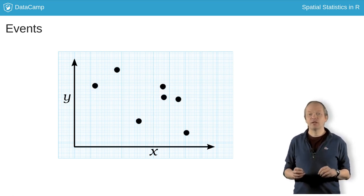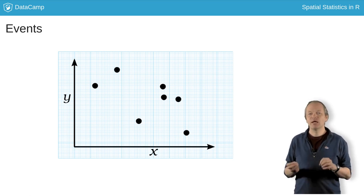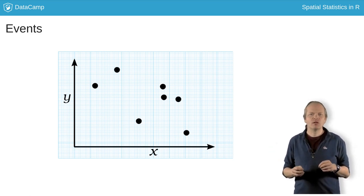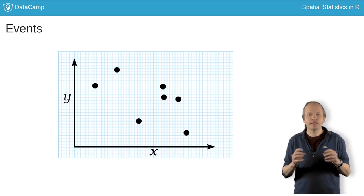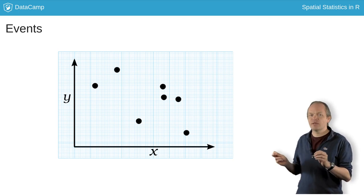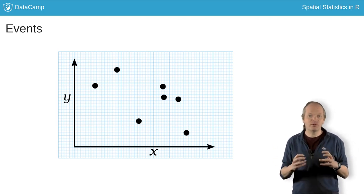An event, however, is where something is happening. It's one of your data points. Sometimes I might call an event a point, and most people will do that. But strictly, in the literature, a point means a location in the space, and an event refers to an observed data point.